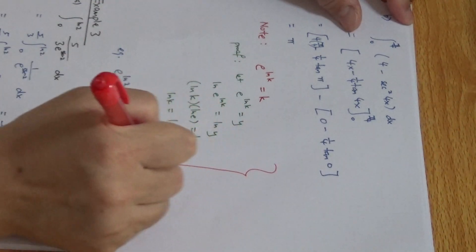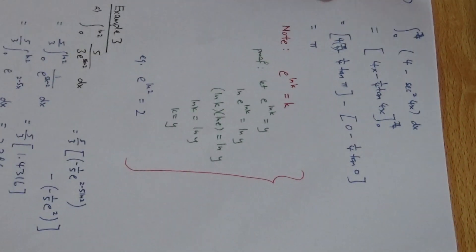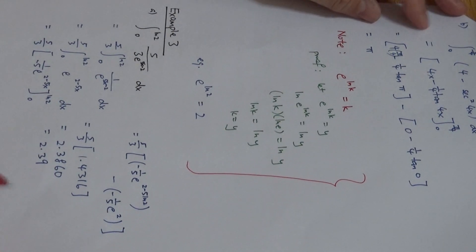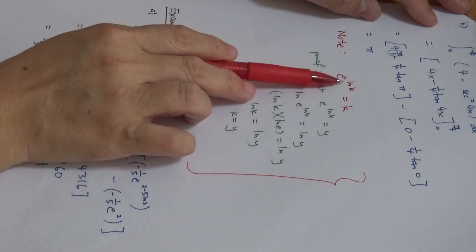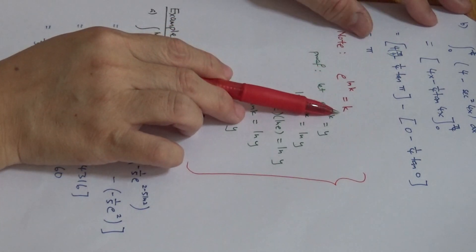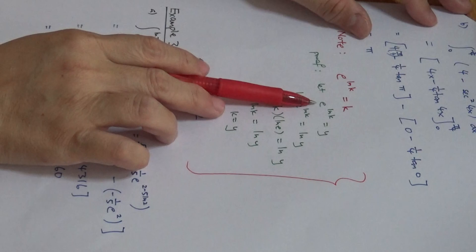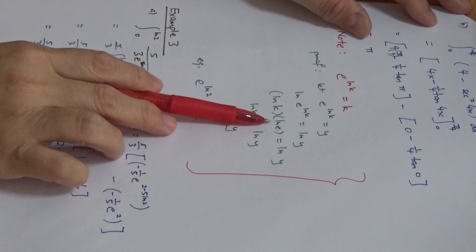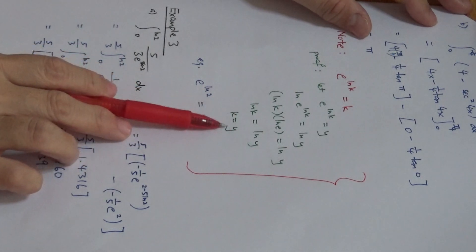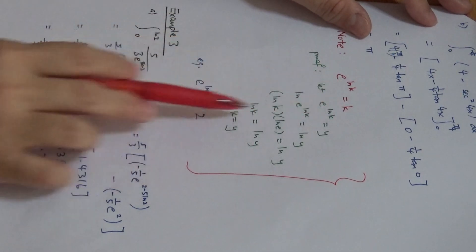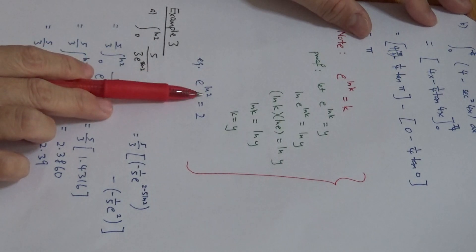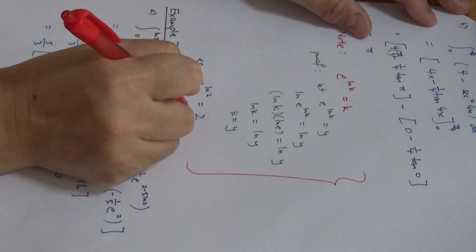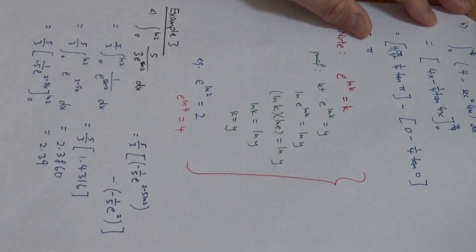This is something to take note of in case they want the integration in terms of exact value. Note that e to the power ln k is actually equal to k. Here is the proof: let e to the ln k equal y, take ln on both sides, ln e is 1, so I have ln k equals ln y, therefore k equals y. Applying this: e to the ln 2 equals 2, and e to the ln 4 equals 4. This simplifies your manipulation.